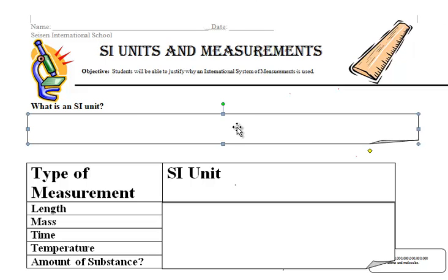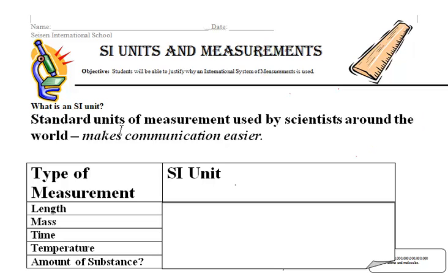So what is an SI unit? A simple definition. A standard unit of measurement used by scientists around the world. It makes communication easier. And I'll give you several examples of when this has gone wrong in the past. Standard unit of measurement.